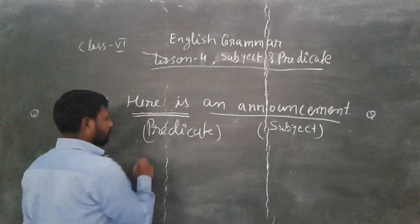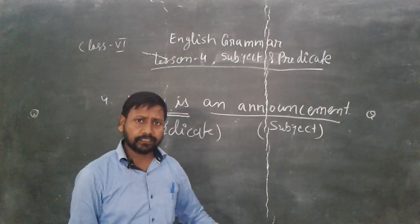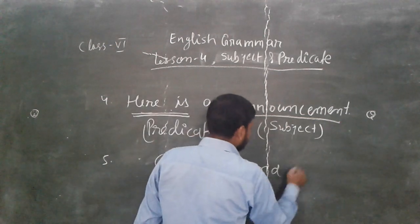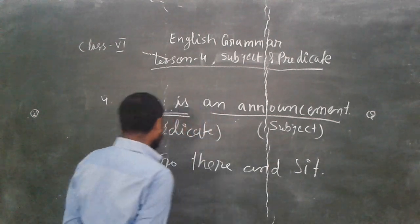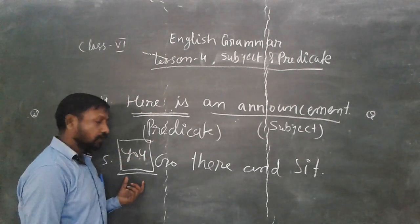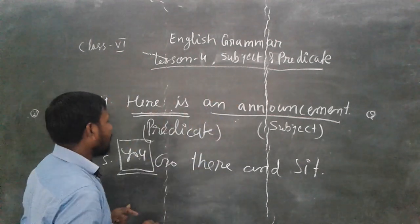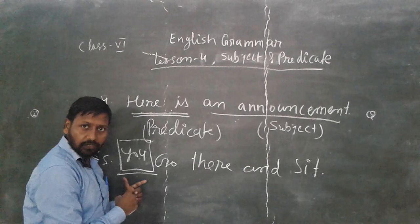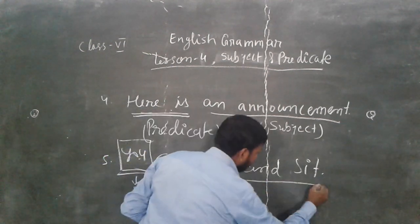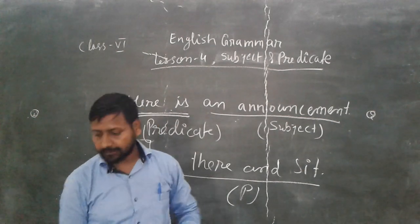Okay my dear friends, last example is here. Sometime happens that you will not find any subject, because there is not written any subject. Suppose I will say, you go there and sit. Go there and sit. That means I am giving a command, but here is no subject. But 'you' is a subject which is hidden. That is the subject. So what is remained, these are predicate. It is not shown while speaking.